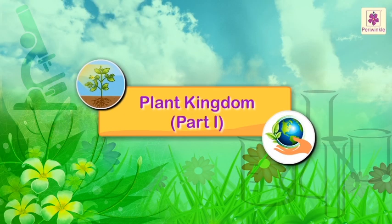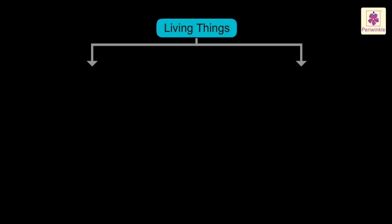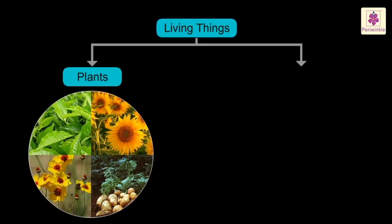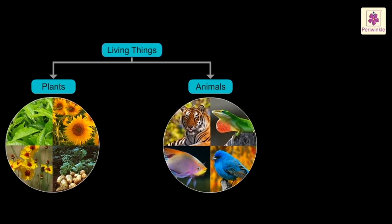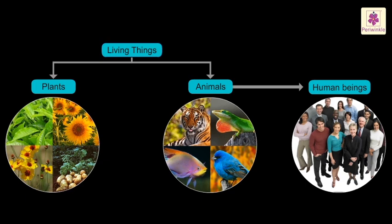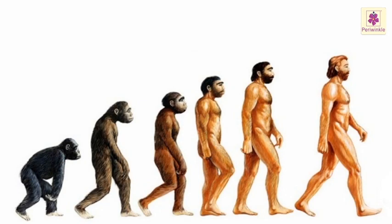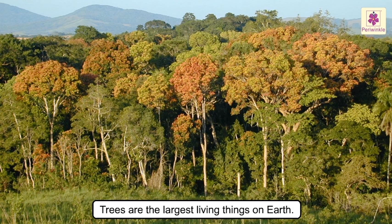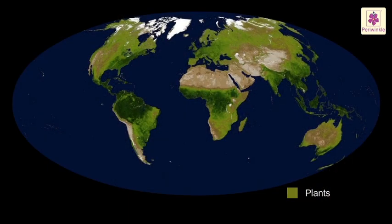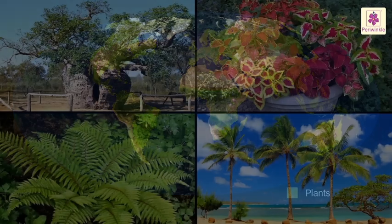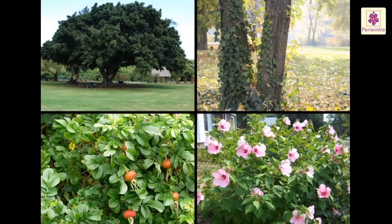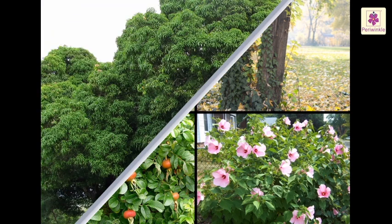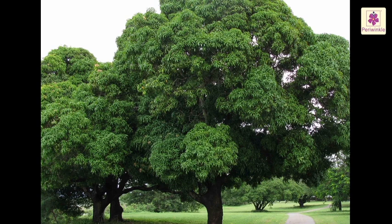Plant kingdom, part 1. Living things can broadly be divided into two main groups: plants and animals. We human beings are part of the animal kingdom, as our ancestors were apes. Trees are the largest living things on earth and they live longer than any animal. They are found in almost all parts of the world and are of different shapes and sizes. Our world is full of different types of plants.